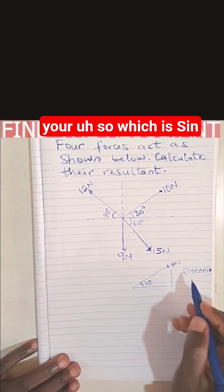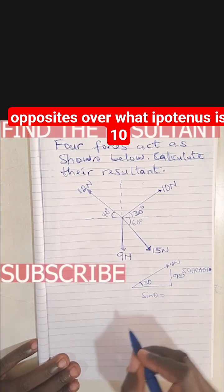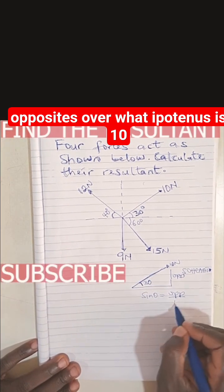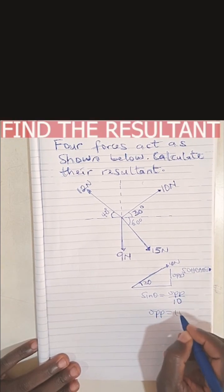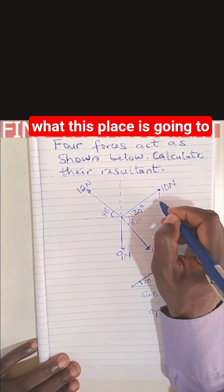Sine 30 is equal to opposite over hypotenuse. The hypotenuse is 10, so opposite is equal to 10 sine 30. So in this place, the vertical component will be 10 sine 30.